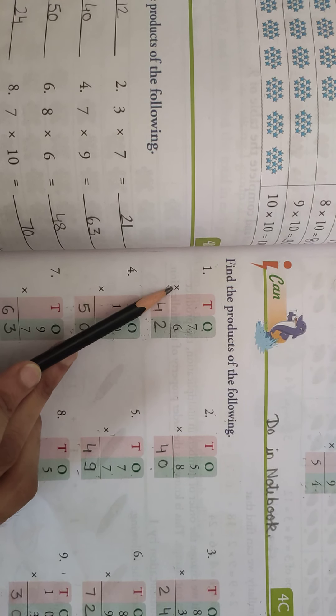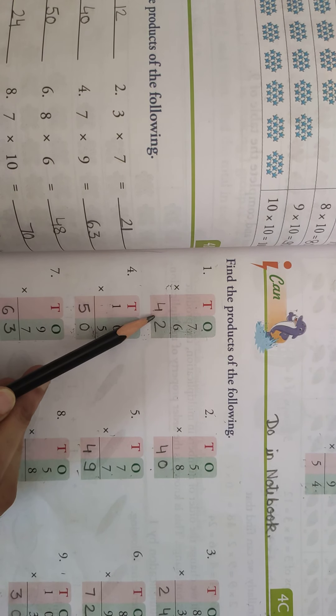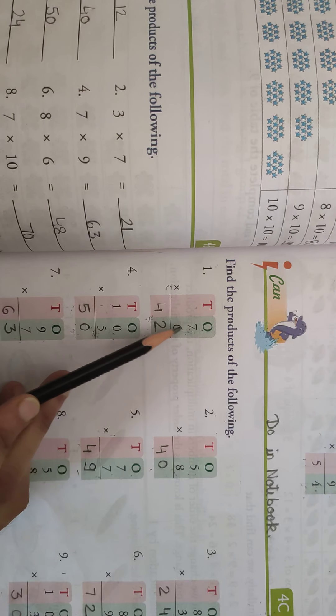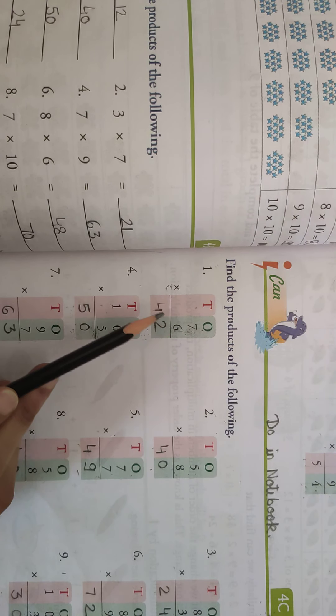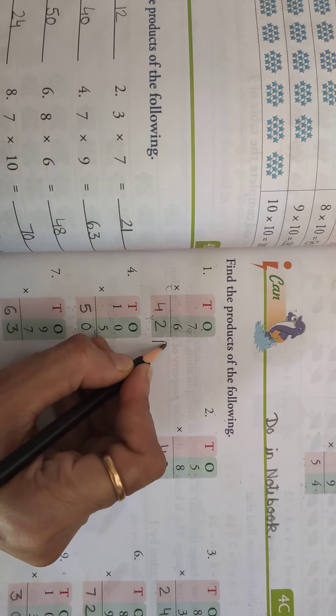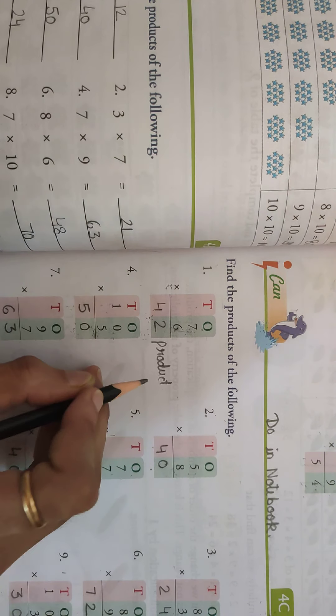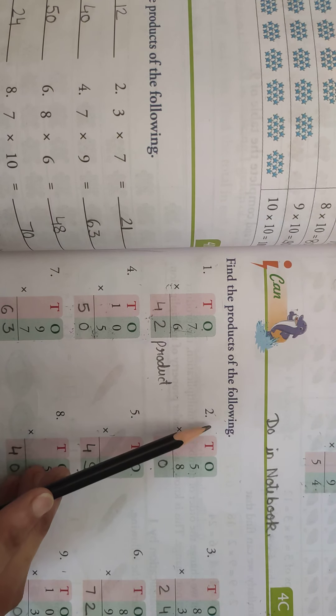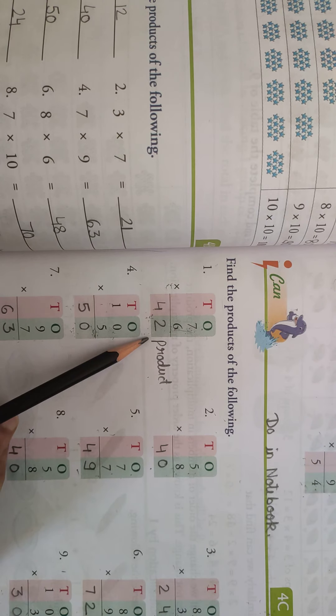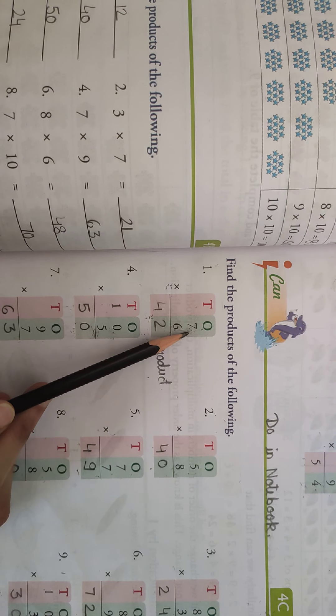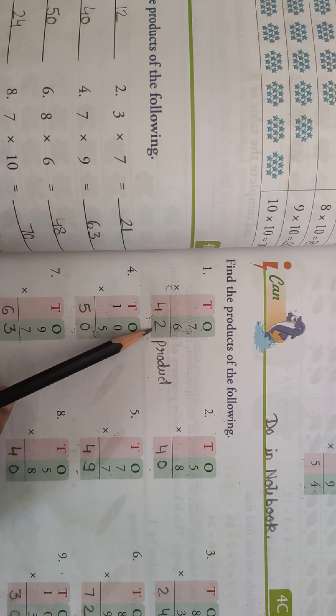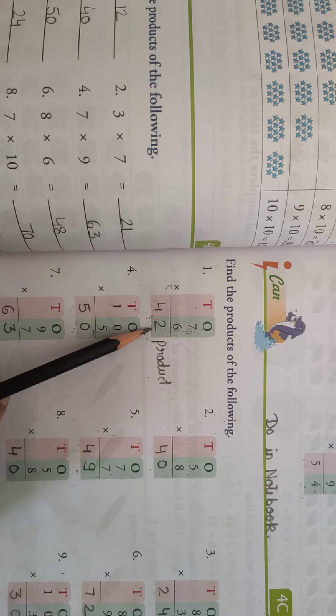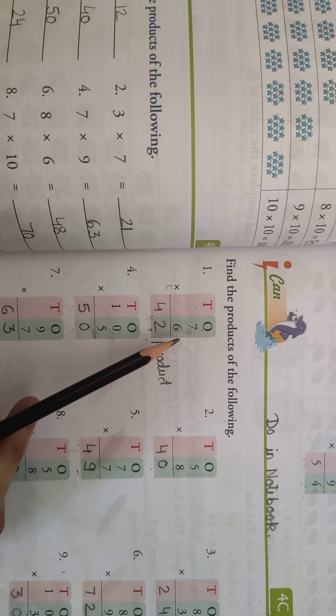Multiply karne wale hai. Okay, to jab ye do factors ko hame multiply karte hai, to joh answer aata hai, usse hame kya kehet hai, product. Okay, to jab bhi hame koi do number ko multiply karte hai, or uska joh bhi answer hota hai, usse hame kya kehet hai, ye product hoga, so never confuse. Okay, jab bhi aapko kaha jahe, find the product of the following, so you have to do multiplication there. Okay, so you can see, 6 7s a, 42. Aapko tables learn honi bhoot zaroori hai, beata, otherwise you can't do it. Okay, so please learn the table, if you had not learned, till now.